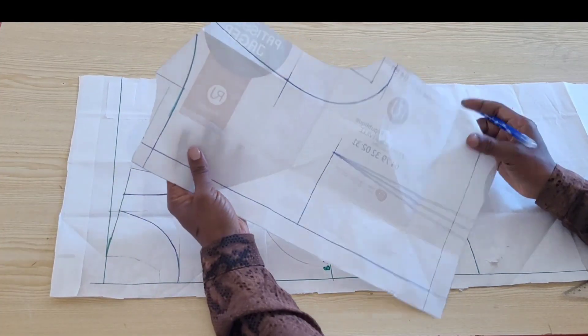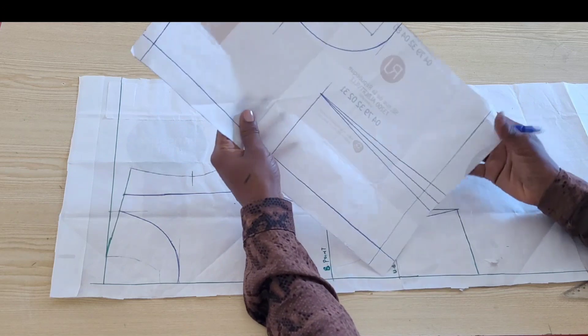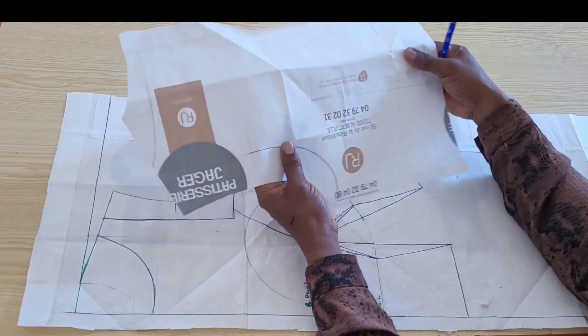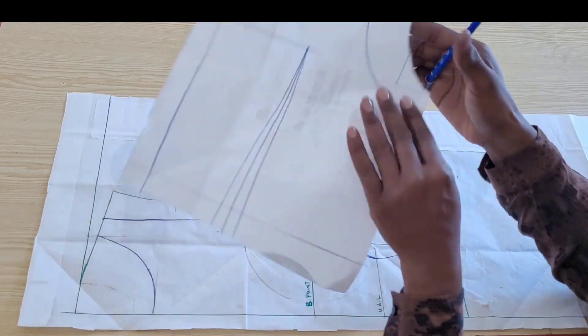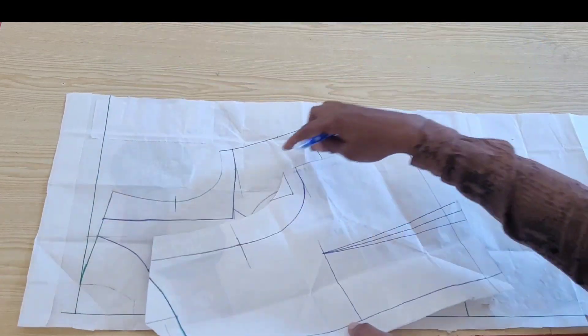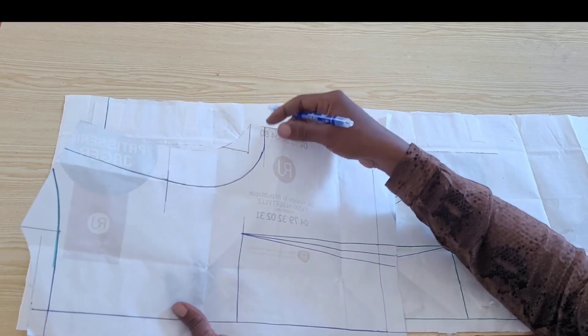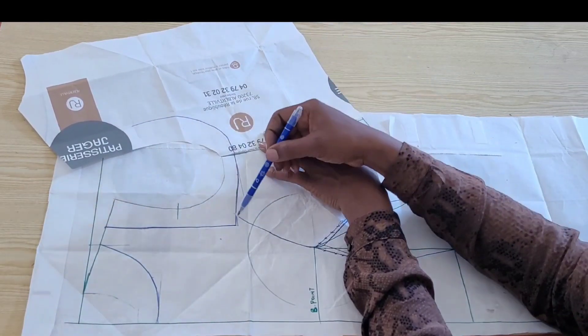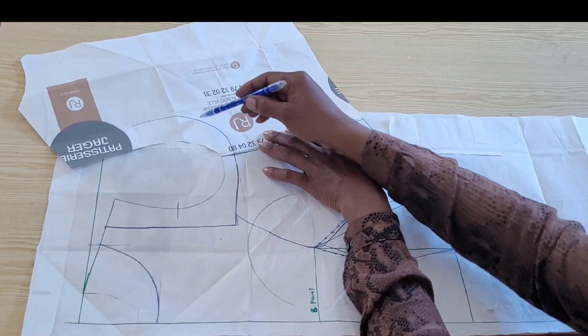To ensure there is a uniform curve from the armhole of the front bodice to the back, I have retraced the armhole of the back bodice on this other side of the paper to enable me align it side by side to the front bodice. And as you can see, there's a uniform curve from the armhole of the front to the back bodice.